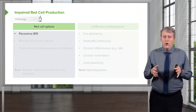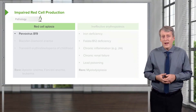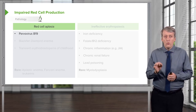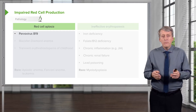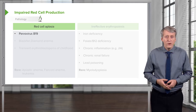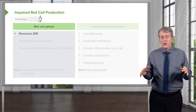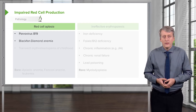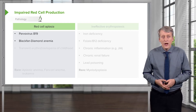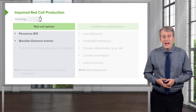Looking at impaired production of cells, the first possibility is that the patient could have a true red cell aplasia — they're simply not making red blood cells. Causes include parvovirus B19 infection, which suppresses bone marrow production. Patients may also have a congenital inability to make red blood cells, a congenital erythroblastopenia, such as Blackfan-Diamond anemia.